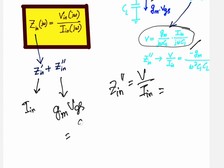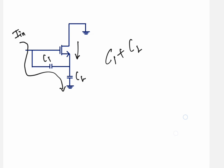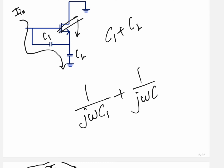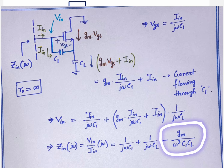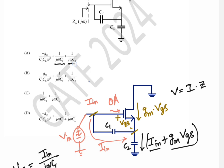The gm·vgs contribution gives a term of minus gm/(ω²·C1·CL) times i_in. The minus sign comes from the two factors of j multiplying to give −1. So the impedance gets modified: Z_in = 1/(jωC1) + 1/(jωCL) − gm/(ω²·C1·CL). Through C1 only i_in flows, but through CL a much larger current flows due to the gm·vgs source.